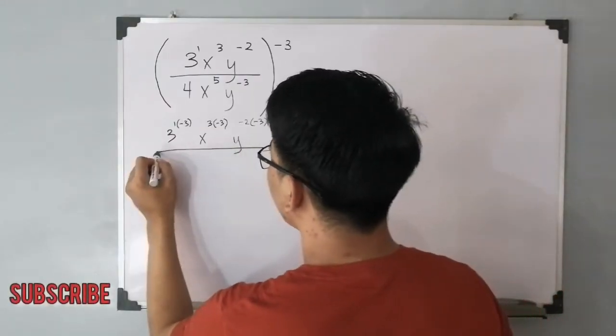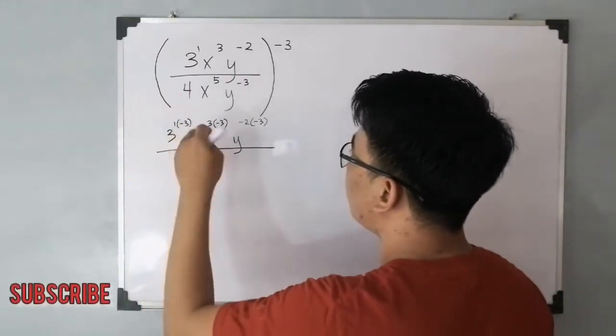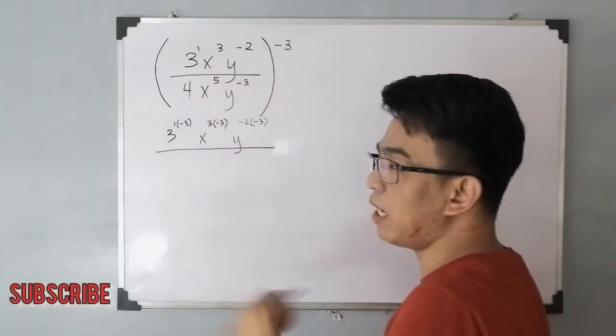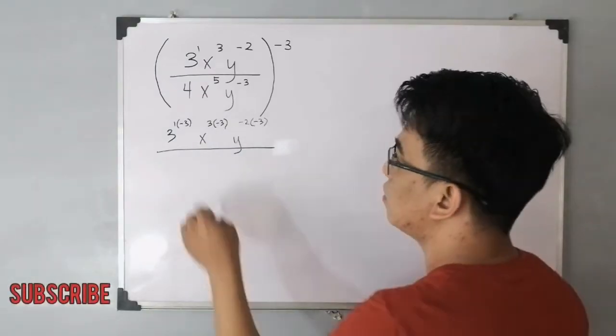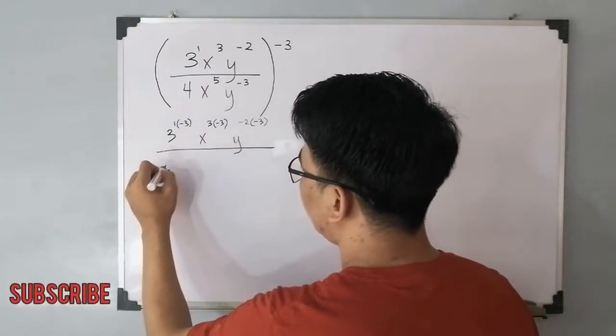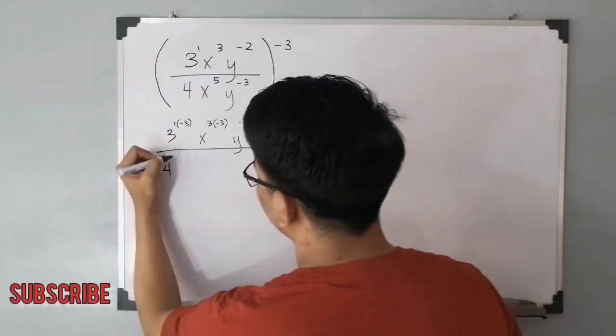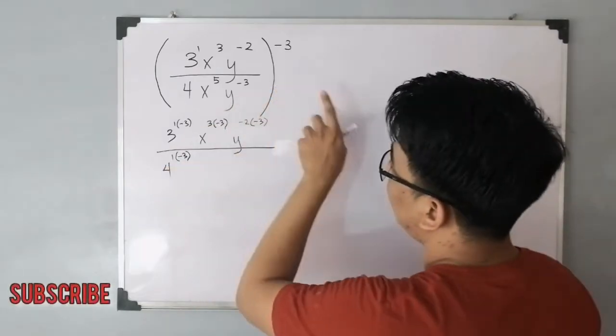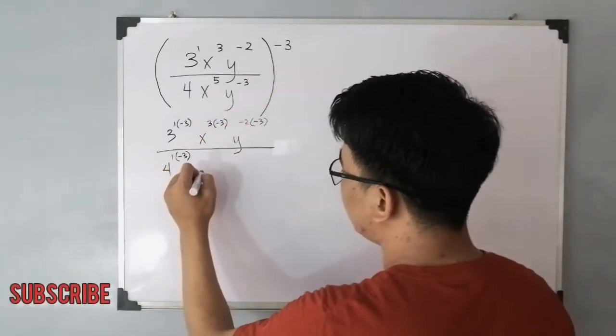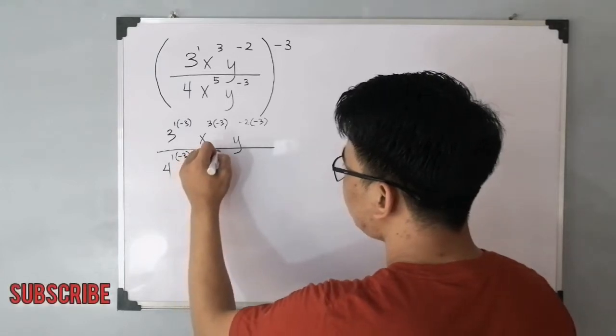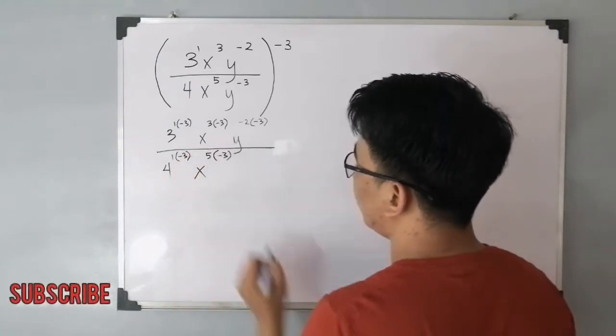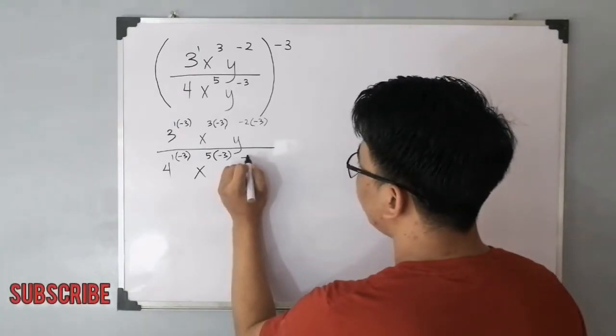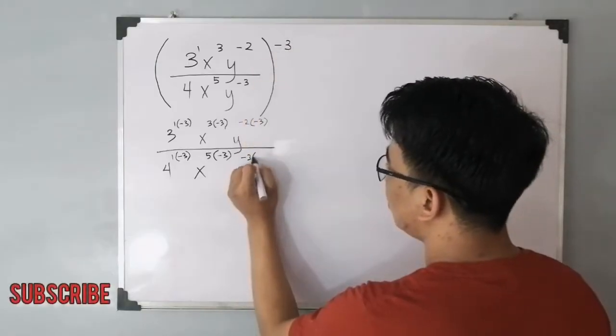So ngayon, magfocus naman tayo sa ating denominator. For the denominator part, we have 4, x raised to 5, and y raised to negative 3. Same process na ginawa natin, we will be applying power rule. So for the coefficient of 4, we have the original exponent which is 1, and then times your negative 3 exponent sa labas. And then for the x variable, you have x raised to 5 times negative 3. And for the y variable, you have y raised to negative 3 times negative 3.